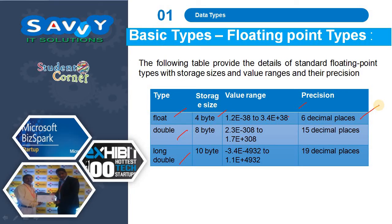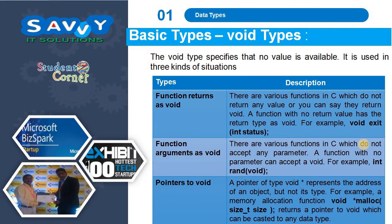Double takes 8 bytes of memory, with range 2.3e-308 to 1.7e+308, with 15 decimal places. Long double takes 10 bytes, with range 3.4e-4932 to 1.1e+4932, with 19 decimal places.